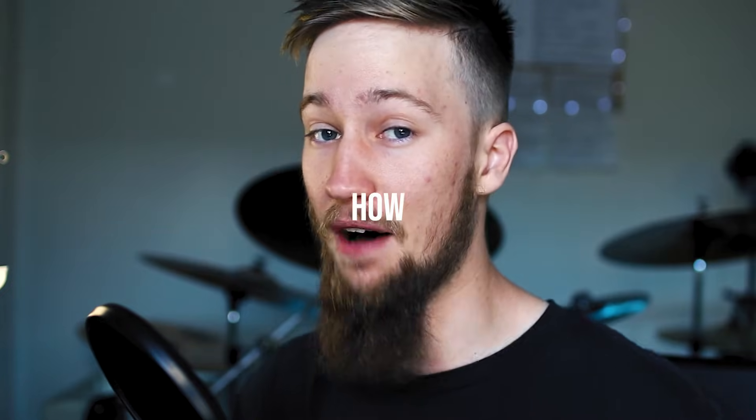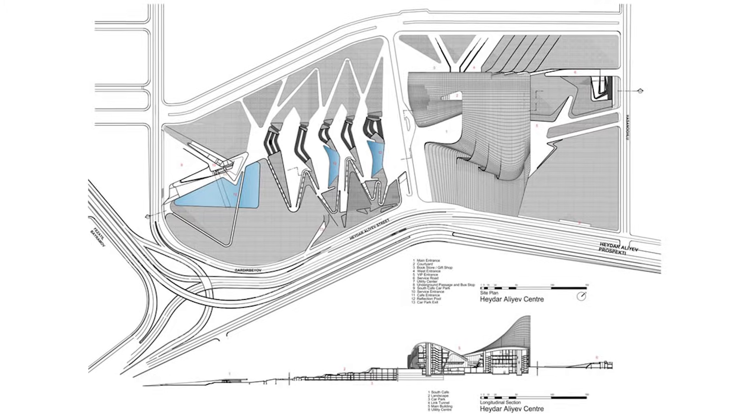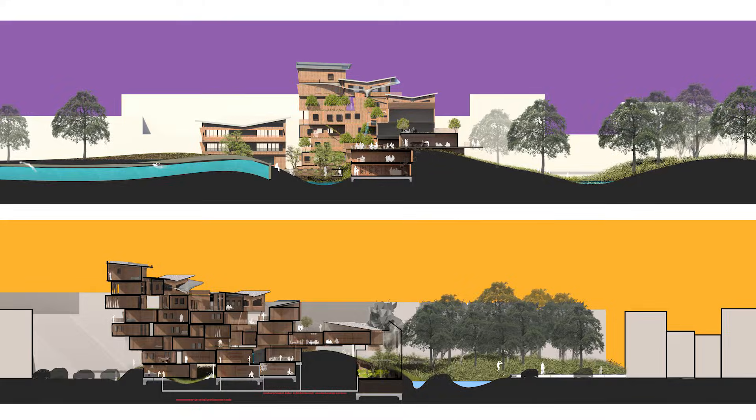If you're studying architecture, engineering, or a similar course, you're going to have to know how to read and draw in scale. In most cases, this means using a scale ruler. Scale rulers come in different shapes and sizes, but they all do the same thing — they let you read off a scaled drawing and draw your own scale drawings, which is awesome.